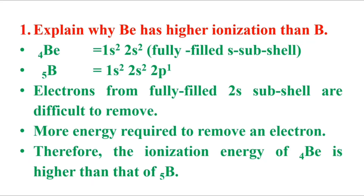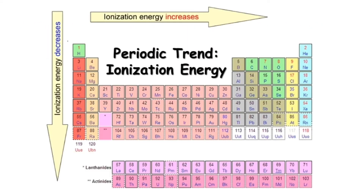Number one: explain why Be has higher ionization energy than B. Ionization energy increases from left to right across a period.